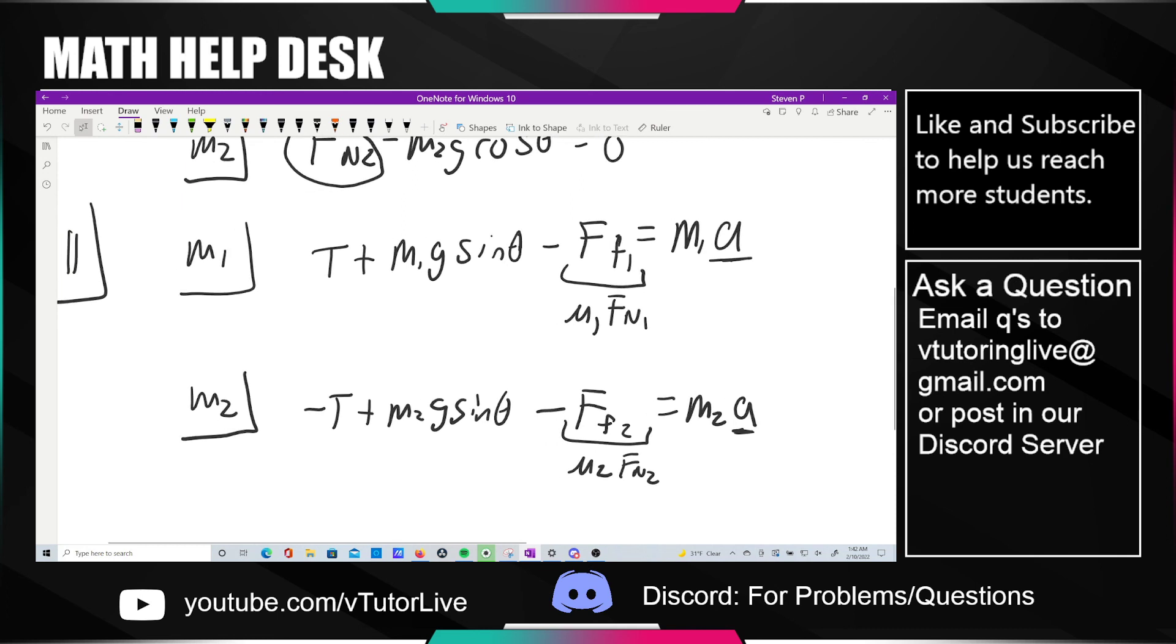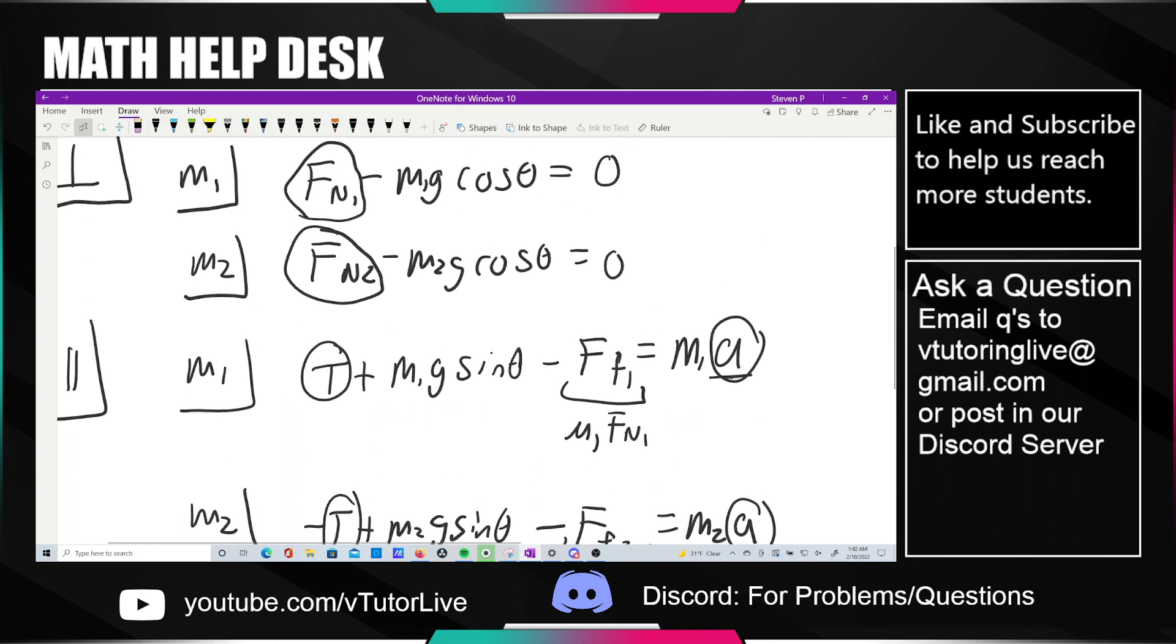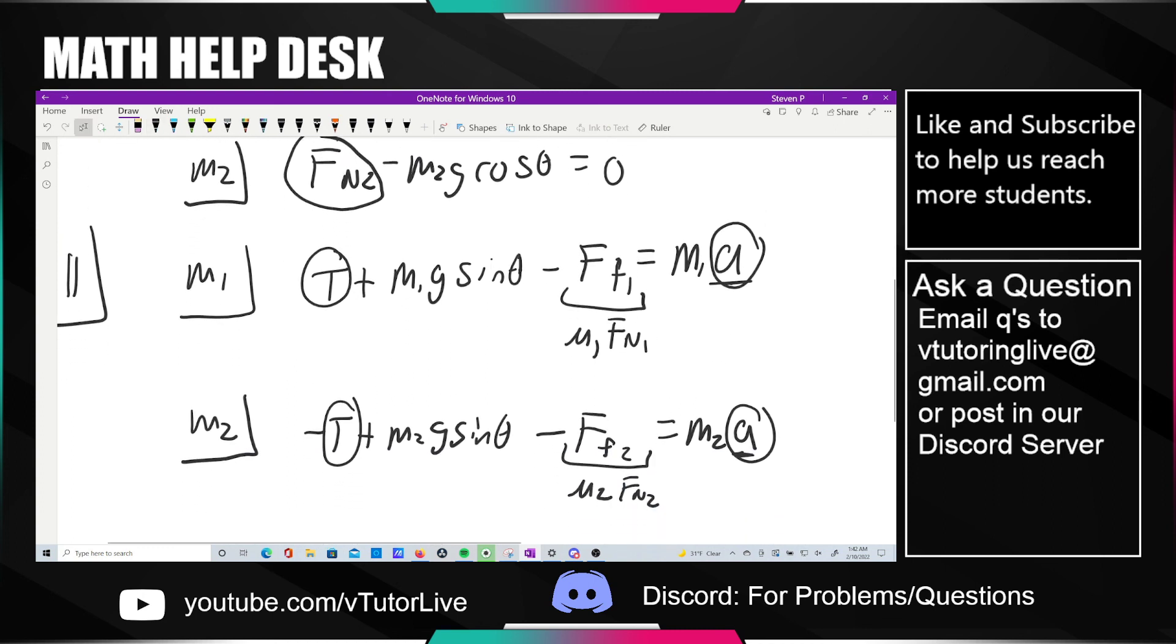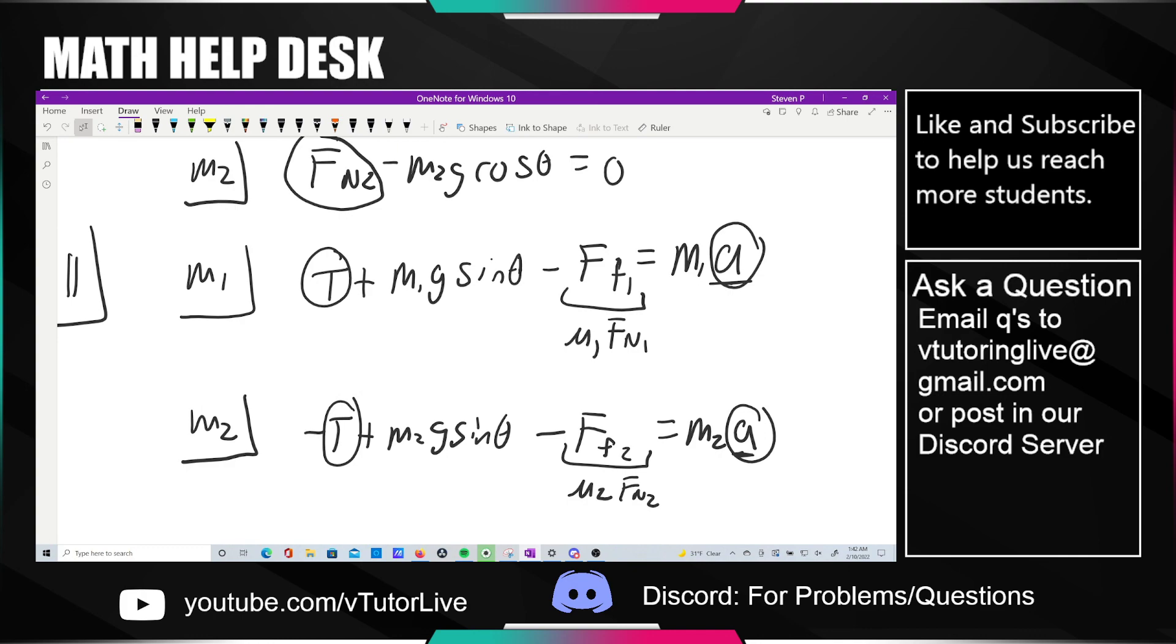But yeah, at this point we really should have all we need, right? If our unknowns are tension and acceleration, it looks to me like everything else here is known. Because we have the masses, we have gravity, we know what theta is, we know the friction coefficients, and from up before we know the normal forces as well. So that should be all you need. So figure that out. Take a look.